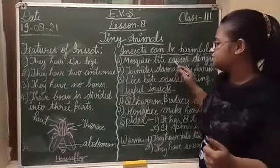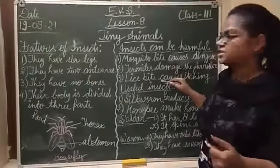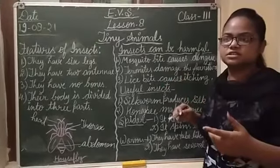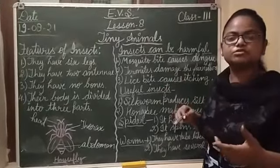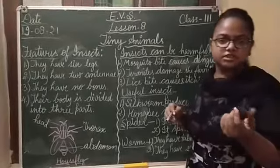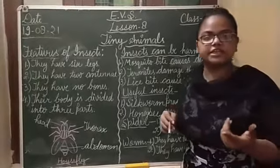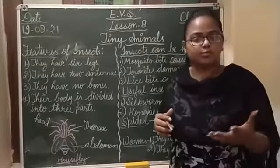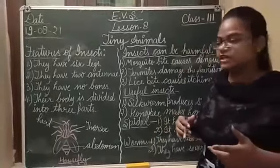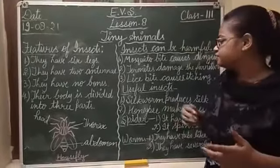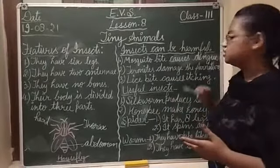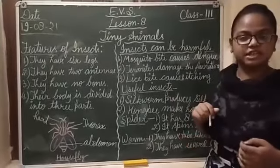Other than these insects, locust causes damage to the fully grown crops. Locusts — jinko hum tiddiyan kehte hain — hamaari crops ko eat karthi hai aur usko damage karthi hai. And wasp also causes itching.